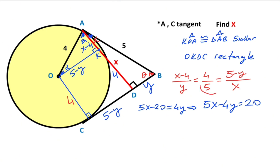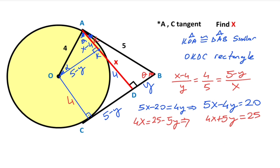Using the right-hand side of the equation, we get 4x equals 25 minus 5y. Therefore: 4x plus 5y equals 25.